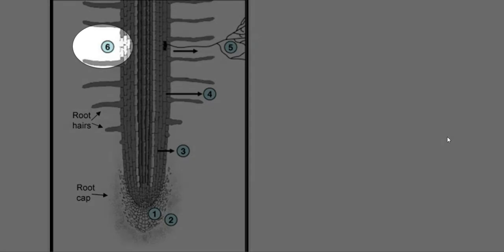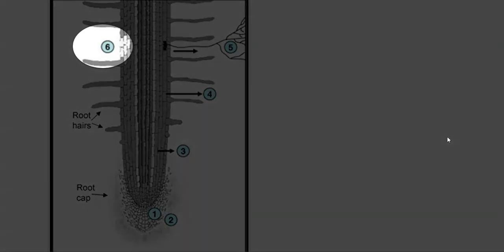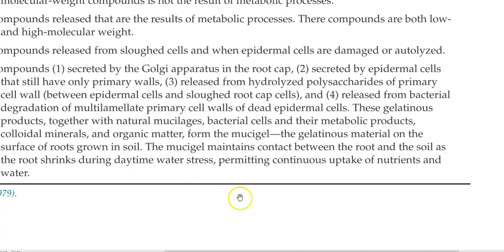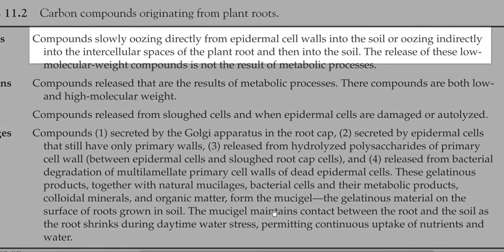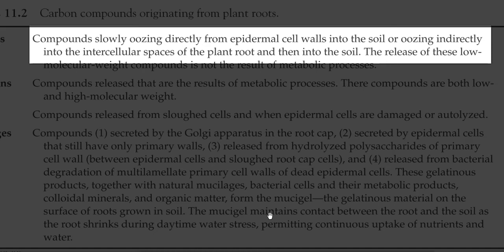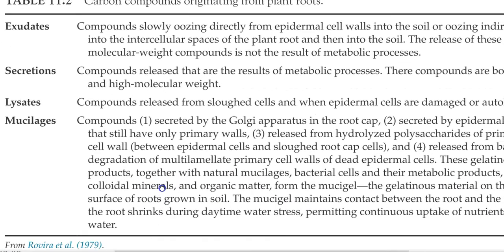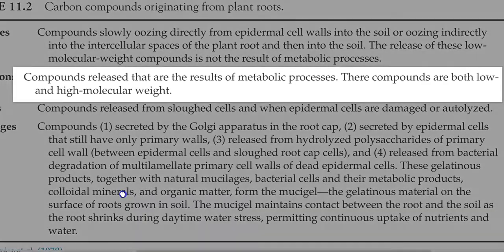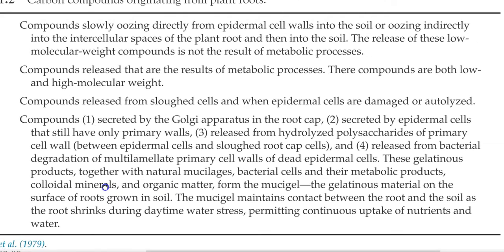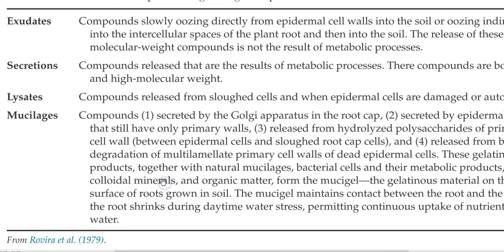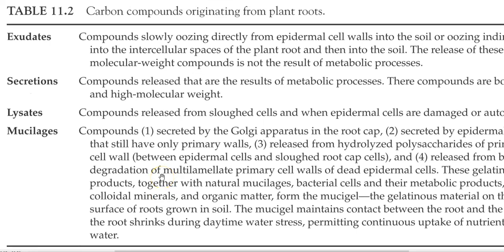The sixth type refers to the loss of carbon due to death or lysis of the root epidermal cells. Carbon compounds originating from plant roots can be divided into four forms: exudates, secretions, lysates, and mucilages. Exudates refer to compounds slowly oozing directly from epidermal cell walls into the soil or indirectly into intercellular spaces then into the soil. Secretions are compounds released as a result of metabolic processes, including both low and high molecular weight compounds. Lysates include sloughed-off cells and content released when epidermal cells are damaged and autolyzed.